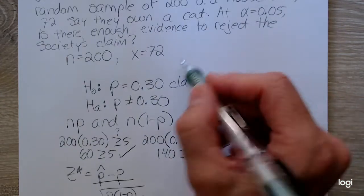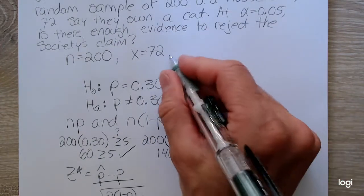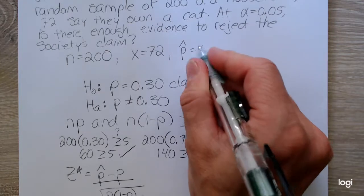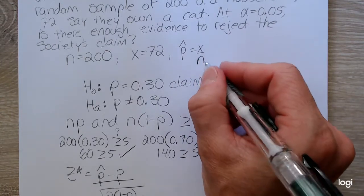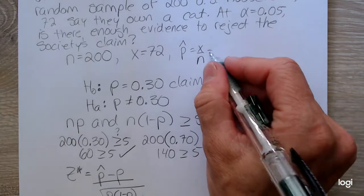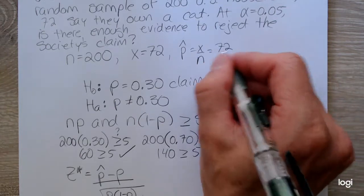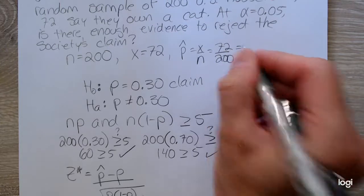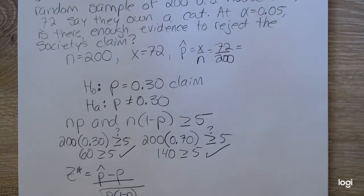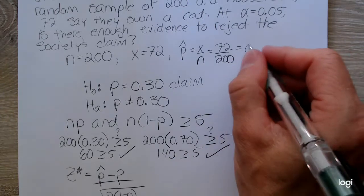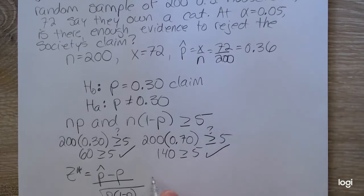So we need P-hat, the sample proportion, and that's equal to X over N, the number of successes out of our sample size. And that will be 72 out of 200. Okay, converting that to a decimal. That's 0.36.